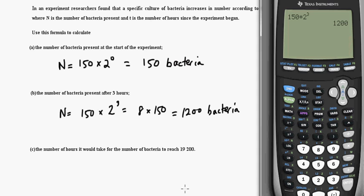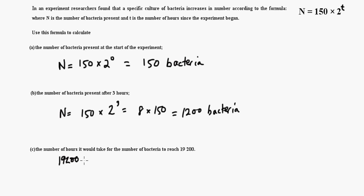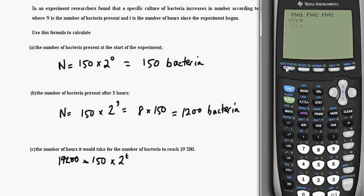Now, the number of hours it would take for the bacteria to reach 19,200. This is where it gets a little tricky. You don't have to know how to use logarithms in math studies. But let me show you two ways to do this. So you have 19,200 equals 150 times 2 to the t power. I guess you could guess and check if you wanted to, but an easy way to do this is, let's just go back to the calculator here. And we'll just put 150 times 2 raised to, well, it's not going to be t, it's going to be x here.